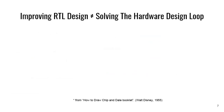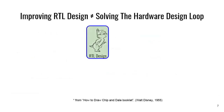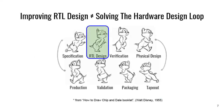We worked on Chisel and got pretty far, but we realized that improving just that one aspect of RTL design doesn't really help — it's not the same thing as solving the entire hardware design loop. Chisel really helps with the RTL design aspect, but there's a whole ecosystem that we have to tackle: how do we verify these designs, how do we do physical design, all the way through the whole lifecycle of the product. We want to iterate over this, so we need a more agile design approach, which means we need to start tackling these other aspects of the loop.